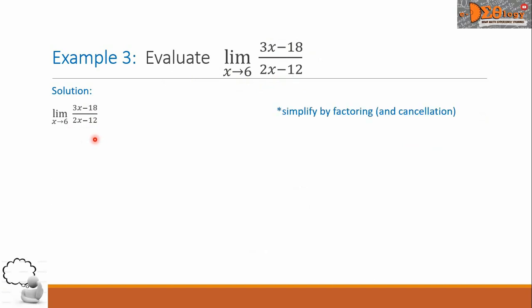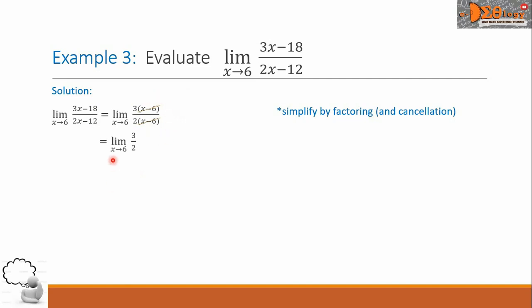So we are going to simplify the function by factoring and look for possible cancellation. In our numerator, there is a common factor of 3, so we have 3 times the quantity x minus 6. In our denominator, the common term is 2, giving us 2 times the quantity x minus 6. The binomial x minus 6 is common in both, so we cancel it out. Our function simplifies to the limit of 3 over 2 as x approaches 6. Since 3 over 2 is a constant, and the limit of a constant equals that constant, the final answer is 3 over 2.